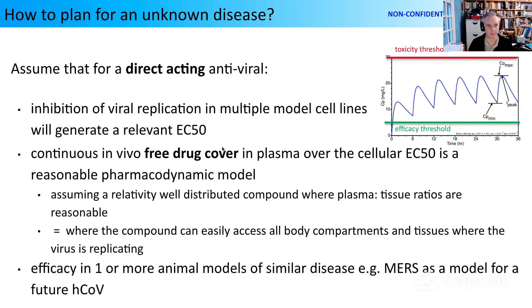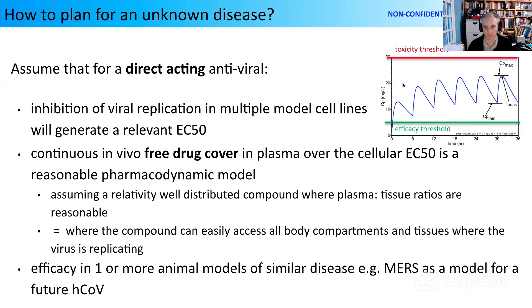More on how to plan for an unknown disease: we are focused on direct-acting antivirals. The model we're working to is that inhibition of viral replication in multiple model cell lines will generate a relevant EC50. The pharmacokinetic-pharmacodynamic model is that you need continuous in vivo free drug cover in plasma over the cellular EC50. You dose your compound, it's excreted, you dose it more, and once you get above the efficacy threshold, you'd expect to see therapeutic benefit. You want to keep your Cmax well below your toxicity threshold.